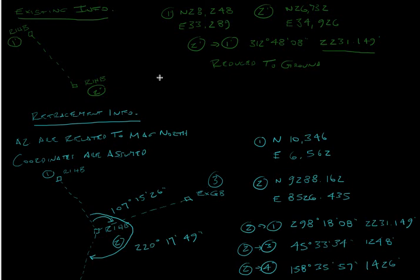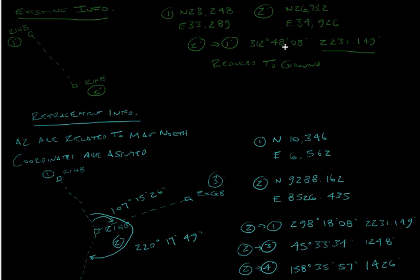Okay, so I've set up our scenario. You can see that point 1 prime is supposed to be 0.1, but the coordinates aren't the same. Points 2 and 2 prime — same thing, the coordinates aren't the same. And if you inverse between 2 prime and 1 prime you get an azimuth of 312°48'08", and from 2 to 1 you get 298°18'08". So they're not the same orientation.